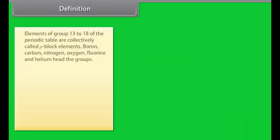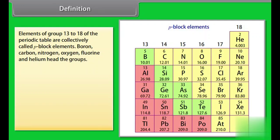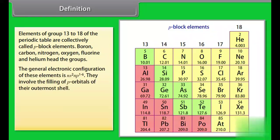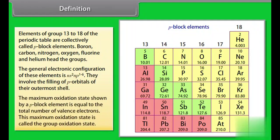Definition. Elements of group 13 to 18 of the periodic table are collectively called p-block elements. Boron, carbon, nitrogen, oxygen, fluorine, and helium head the groups. The general electronic configuration of these elements is ns2 np1-6. They involve the filling of p-orbitals of their outermost shell. The maximum oxidation state shown by a p-block element is equal to the total number of valence electrons. This maximum oxidation state is called the group oxidation state.